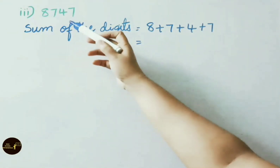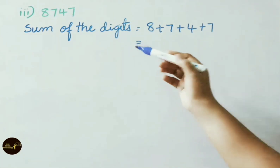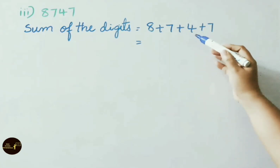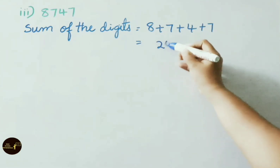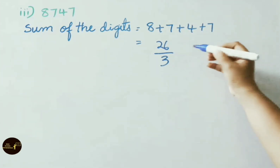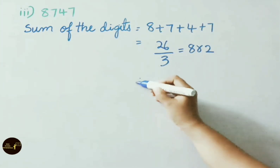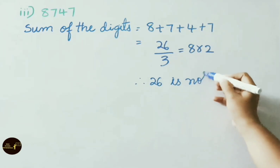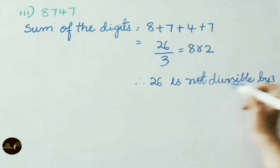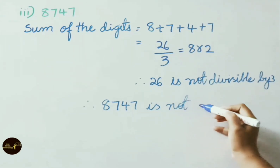Third sum: is 8,747 divisible by 3? First we do the sum of the digits: 8+7+4+7. 8+7=15, 15+4=19, 19+7=26. Now divide 26 by 3: 3 times 8 is 24, leaves remainder 2. Therefore 26 is not divisible by 3, and so the given number 8,747 is not divisible by 3.